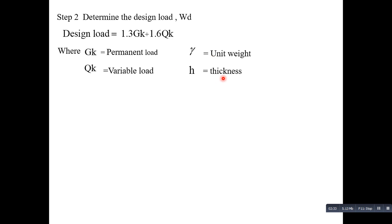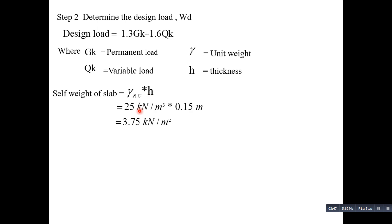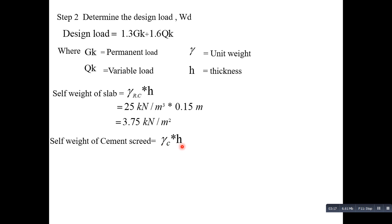First, calculate the permanent load. The self-weight of the RC slab is the unit weight of reinforced concrete multiplied by its thickness: 25 kN/m³ × 0.15 m = 3.75 kN/m². Next, the self-weight of the cement concrete screed is 23 kN/m³ multiplied by its thickness of 0.03 m, giving 0.69 kN/m².